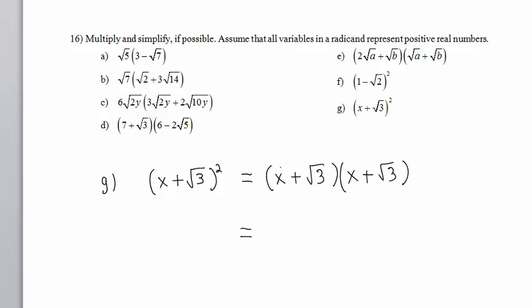And then FOIL. The first, X times X is X to the second power, X squared. The outside is X times square root of 3. The inside happens to be the same, X times square root of 3. And the last, square root of 3 times square root of 3 is square root of 9, which is 3.